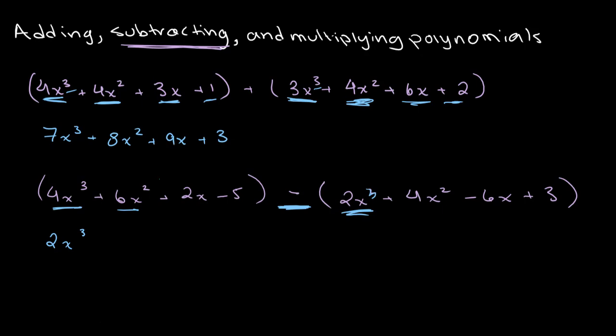Our next like terms are 6x squared and 4x squared. 6 minus 4 gives us 2, so we get plus 2x squared. Then 2x minus negative 6x: when you subtract a negative number it's the same as adding it, so we get plus 8x. And then we have minus 5 minus 3, which is minus 8. This is our answer.